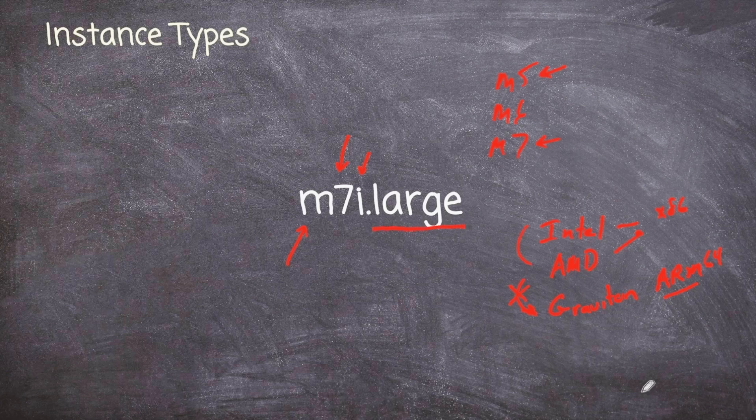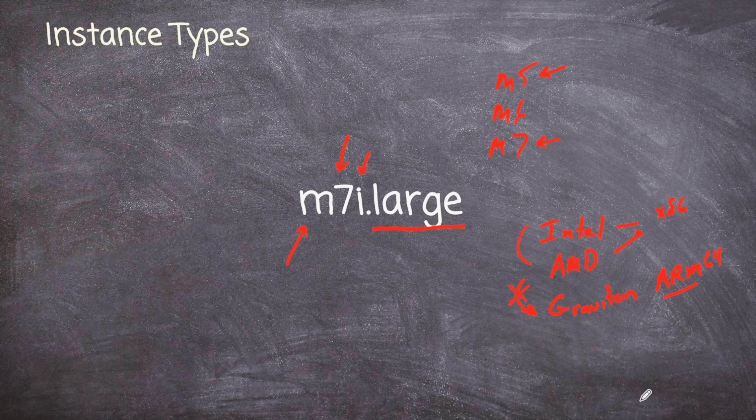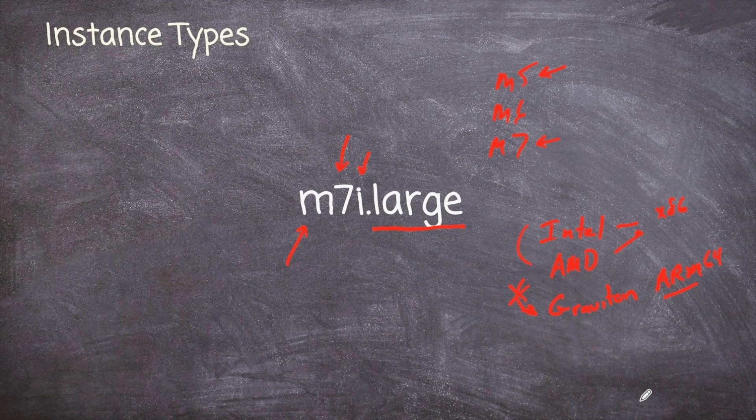You'll see different sizes. You'll see nano, micro, small, medium, large, xlarge, 2xlarge. And that just represents how much CPU and how much memory that particular instance has been equipped with.